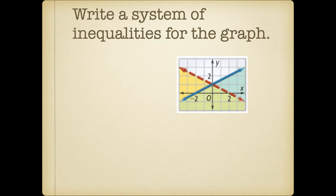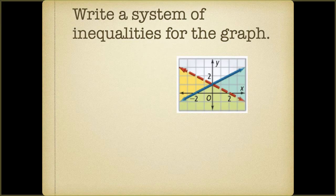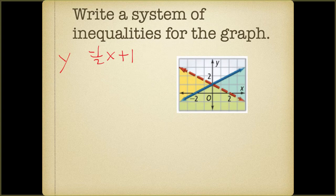Here we have another graph — write a system of inequalities for it. The green area is the common shaded region. For the red line, the slope is negative one-half going down one over two, and we cross the y-axis at one, so the line is y = −½x + 1. We are shaded below the line, giving us a less-than symbol. It is a dashed line, so we do not include the equal bar.